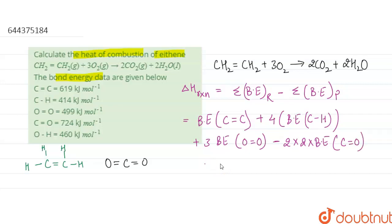Plus 2 H₂O. In H₂O, there are two O-H bonds — the bond between oxygen and hydrogen. So we write: 2 into 2 times the bond energy of O-H.